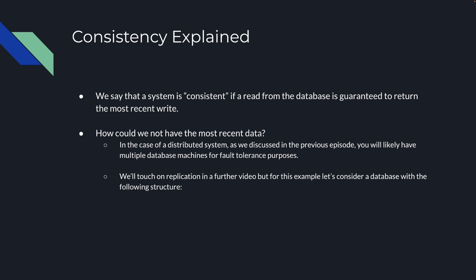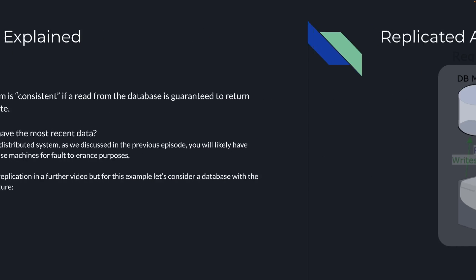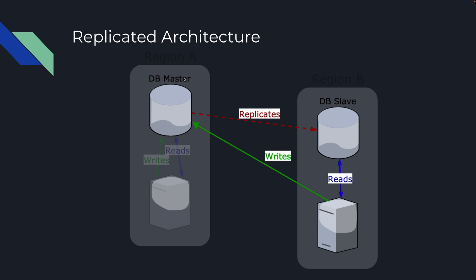We'll touch on replication in a further video. But for this example, let's consider a database with the following structure. On the left we have a database master, and these boxes are clients which are going to be reading from the database. We also have a slave database, basically the same as the master. The master replicates data — when it receives a write, it sends that write to the slave, and the slave puts it into its memory. But in the time it takes for replication to happen, another request could come into the slave and read stale data, because all writes go through the master and are then pushed down to the slaves. Therefore, we can have a case where we actually read old data.